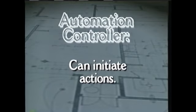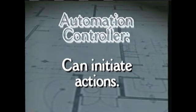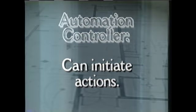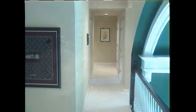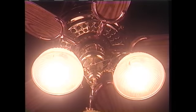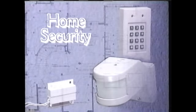Automation controllers can also initiate actions on their own. For example, while the owners are away, a security feature could automatically turn the lights around the home on and off at irregular times, which can give a home the appearance that it is occupied. This feature could make the home less attractive as a target for intruders. Home security is one of the more popular uses of home intelligence.